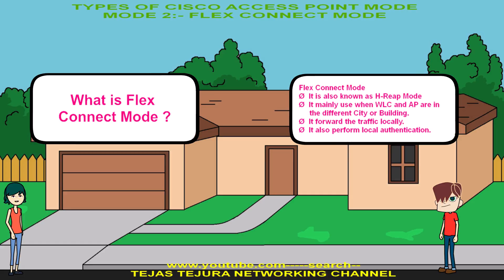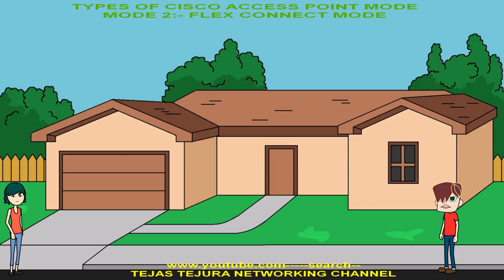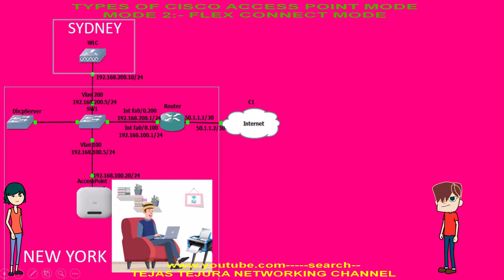That's not so clear. Can you explain with some example? Sure. Look at this diagram. In this diagram, WLC is in Sydney and the user and access point are in New York. If the access point is in local mode, when a user wants to print to a printer which is right next to him, the traffic flows from New York to Sydney and from Sydney back to New York and then to the printer.